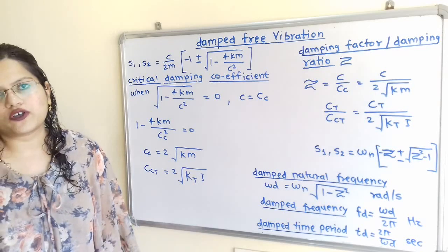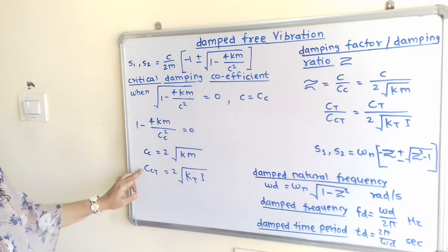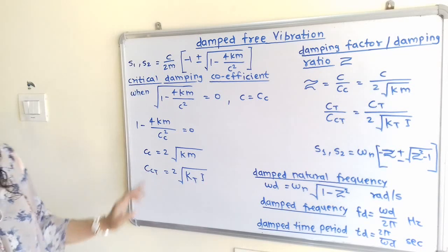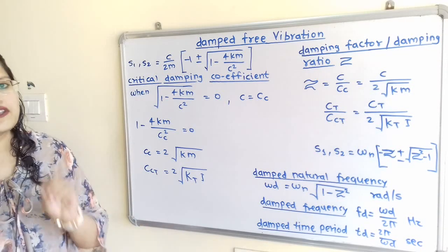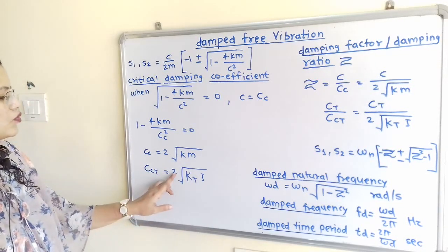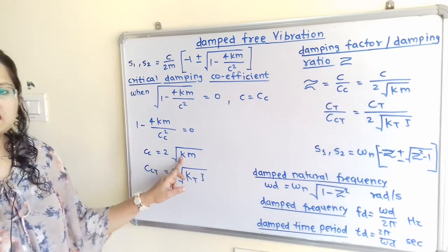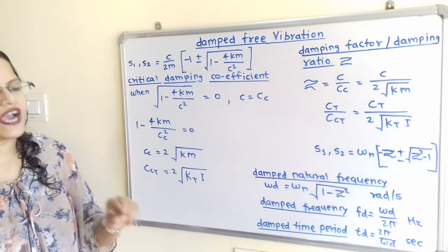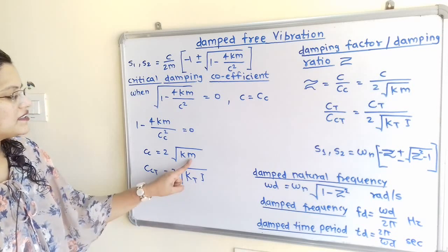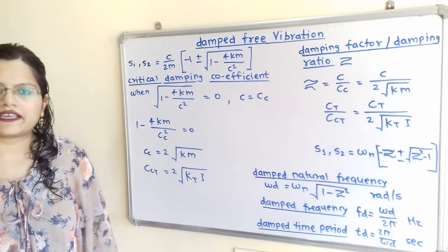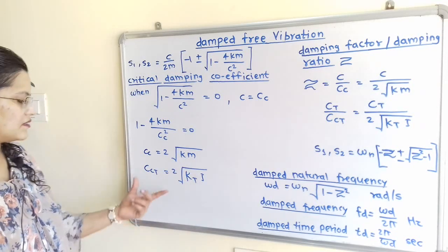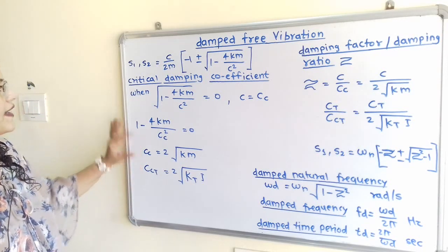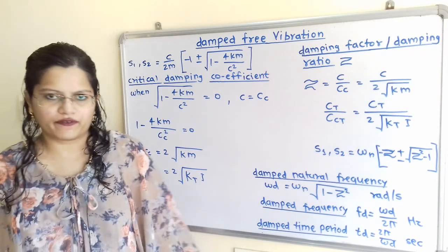For the torsional system, the critical damping coefficient is CcT, which equals 2√(Kt·I), where Kt is the torsional spring stiffness and I is the mass moment of inertia. These two formulas are used to find the critical damping coefficient.